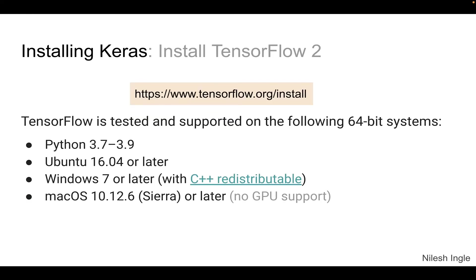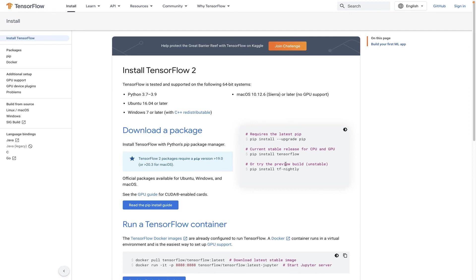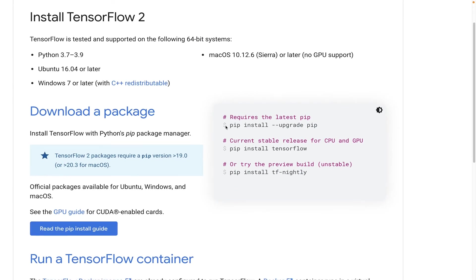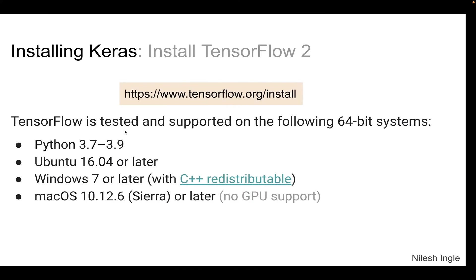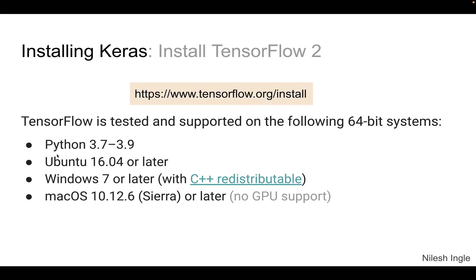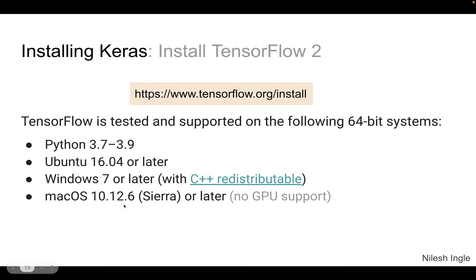For installing Keras, the suggestion is to install TensorFlow 2. On the TensorFlow website you can see the commands and software requirements: Python 3.7 to 3.9, Ubuntu 16.04 or later, Windows 7 or later with C++ redistributable, and macOS 10.12.6 Sierra or later. If you don't have this on your machine, that's still not an issue because most of this can be done in Google Colab, which I'll talk about in the following video.